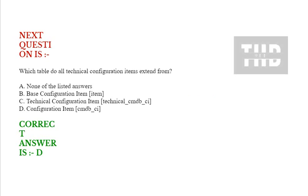Question: Which table do all technical configuration items extend from? Option A: none of the listed answers. Option B: base configuration item (item). Option C: technical configuration item, technical_cmdb_ci. Option D: configuration item, cmdb_ci. Correct answer is Option D.